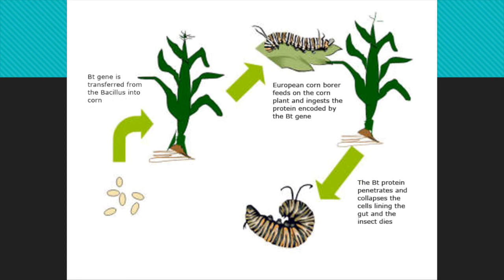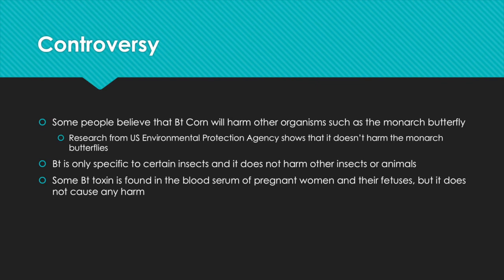There is actually some controversy surrounding BT corn. Some people believe that BT corn will harm other organisms such as the monarch butterfly, but research from the U.S. Environmental Protection Agency shows that it doesn't harm monarch butterflies. And since BT is only specific to certain insects, it does not harm other insects or animals. Although some BT toxin is found in the blood serum of pregnant women and their fetuses, there is no harm that we know of, so it is actually pretty safe for everyone else.